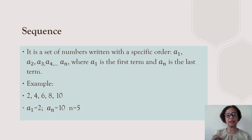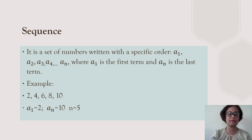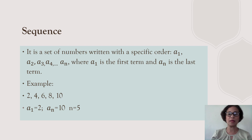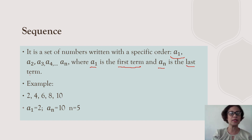Let us now define mathematically what a sequence is. A sequence is a set of numbers written in a specific order, and that order can be named as a sub 1, followed by a sub 2, a sub 3, a sub 4, up until a sub n — where a sub 1 is the first term of the sequence and a sub n is the last term of the sequence.